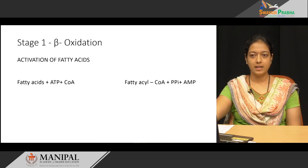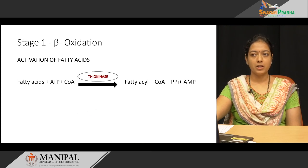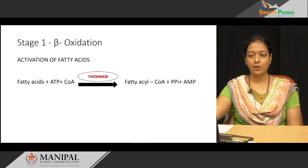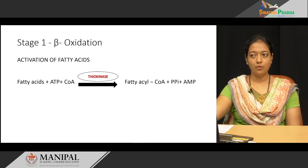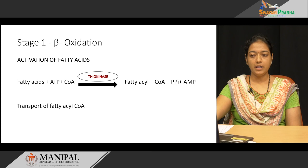Stage 1 of beta oxidation is the activation of the fatty acid. The fatty acid gets condensed with coenzyme A with the help of the enzyme thiokinase, also called fatty acyl-CoA synthetase. In this reaction, ATP is utilized; ATP gets hydrolyzed into AMP and pyrophosphate. Since pyrophosphate is a high energy component, the ATP utilization is equal to two ATPs. This pyrophosphate immediately undergoes hydrolysis to form inorganic phosphate, driving the reaction forward and making it irreversible. The activated fatty acyl-CoA then gets transported from the cytosol to the mitochondria.